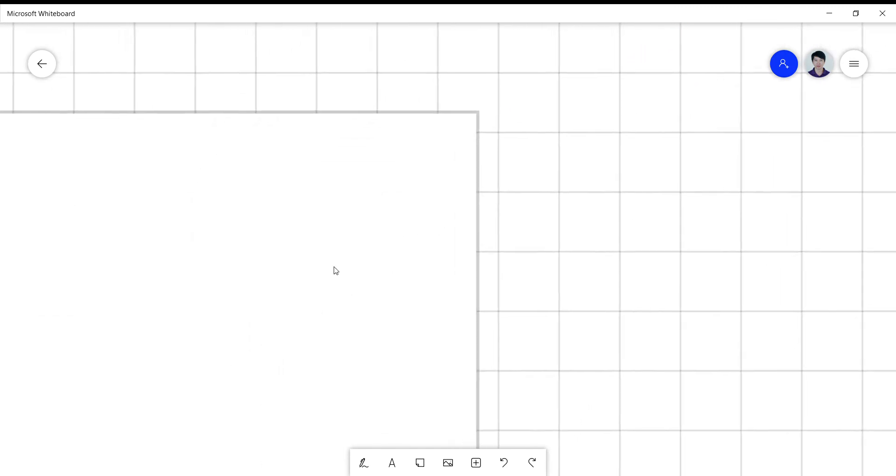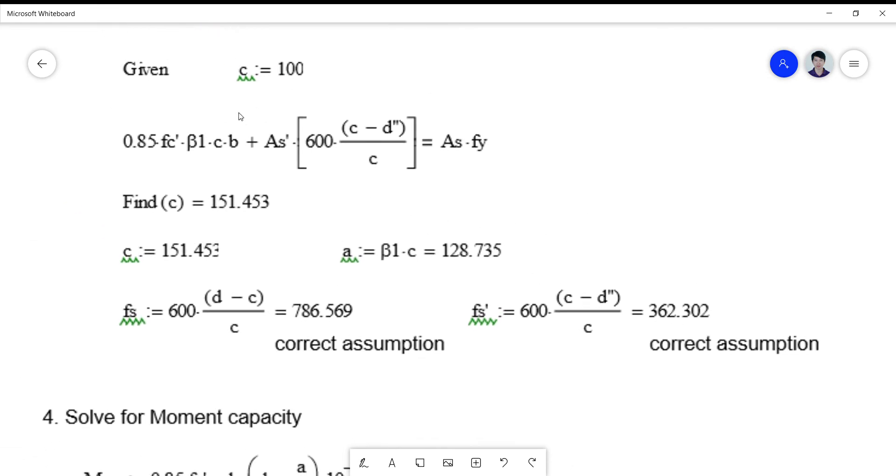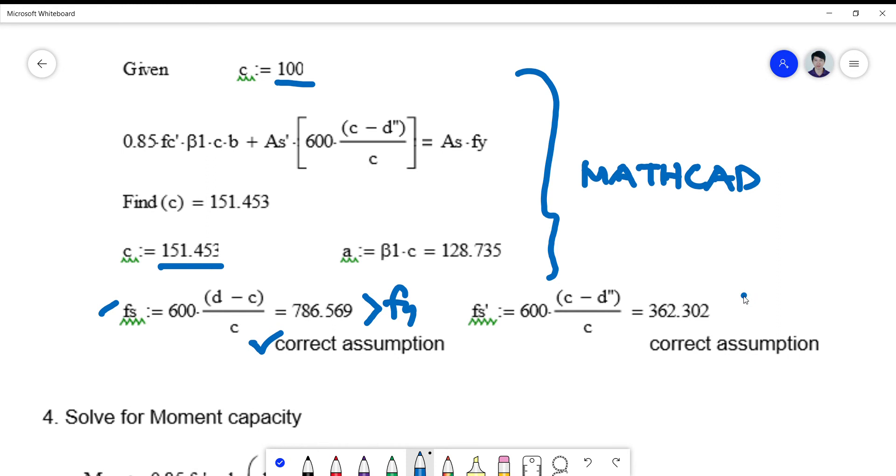I didn't solve this using quadratic formula - I have a MathCAD tool so I just plug in the values. This is a MathCAD procedure, so you might be confused - do not worry about this. This is just like any calculator. I just assume a value of 100, and it gives me a correct value of 151. That's how MathCAD works. If you don't know MathCAD, you can solve it by using quadratic equation. I will not teach you how to do it because I assume you know how to solve quadratic equations. So C is 151.453, A is beta 1·C = 128. Check again FS - this is greater than FY, correct assumption, and this is less than FY, correct assumption. So we don't have a problem anymore.